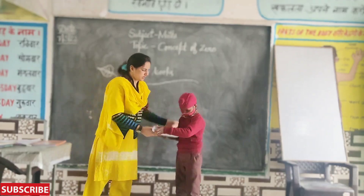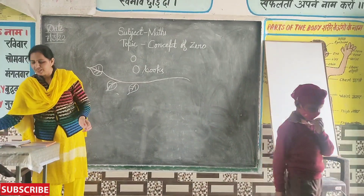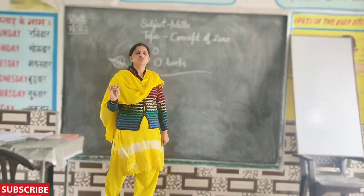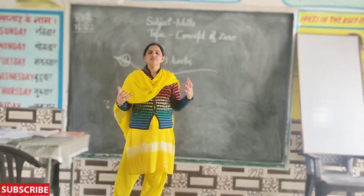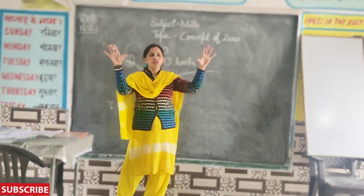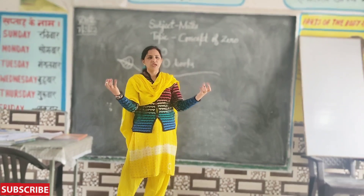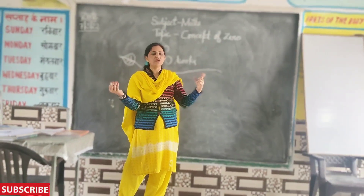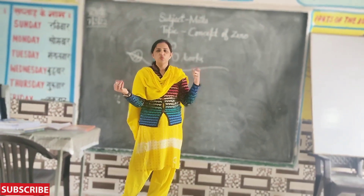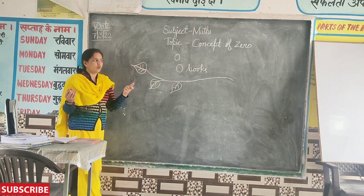Very good. So when we have nothing — nothing is left — the quantity is zero. What is the quantity? Zero. Quantity kya hoti hai? Zero.